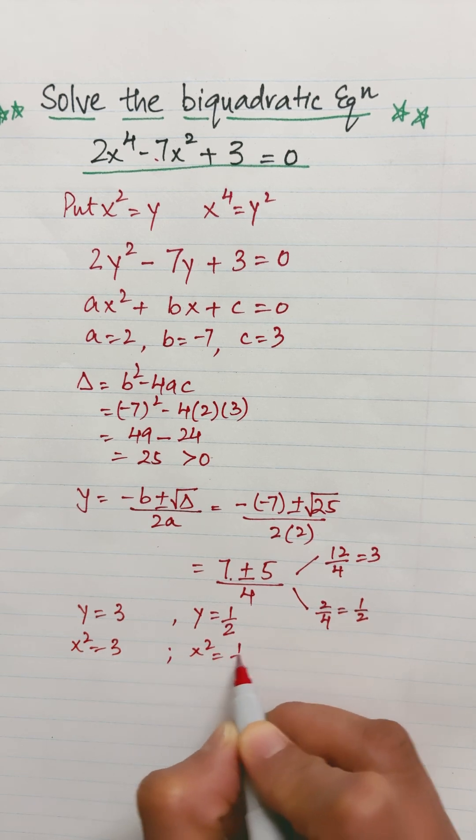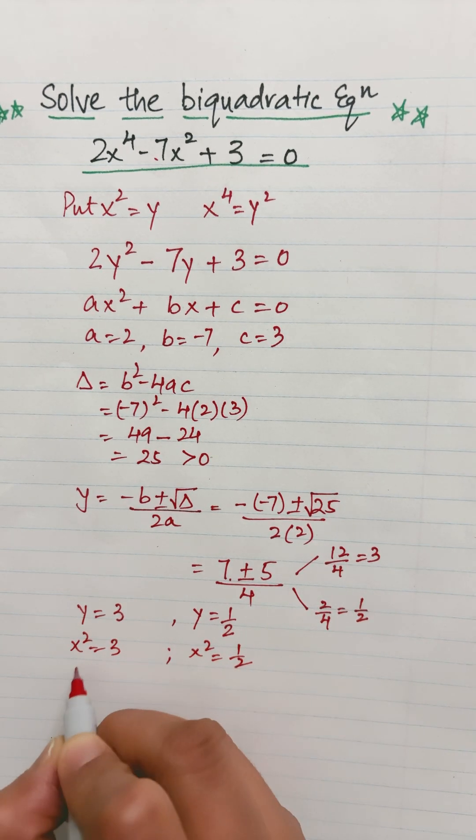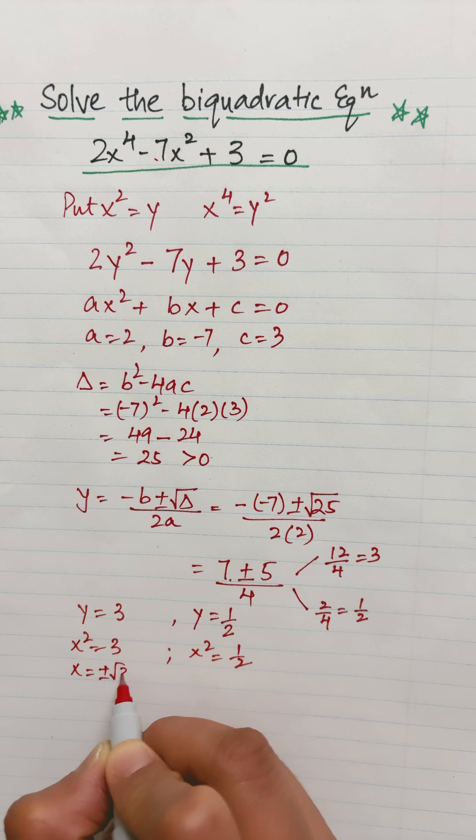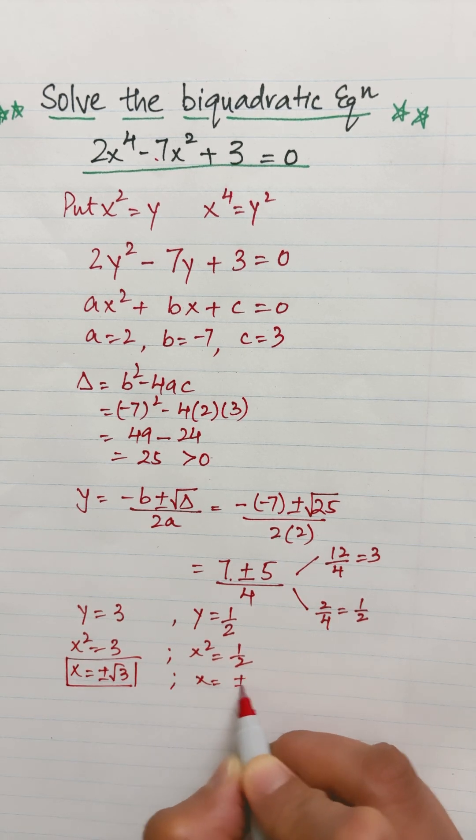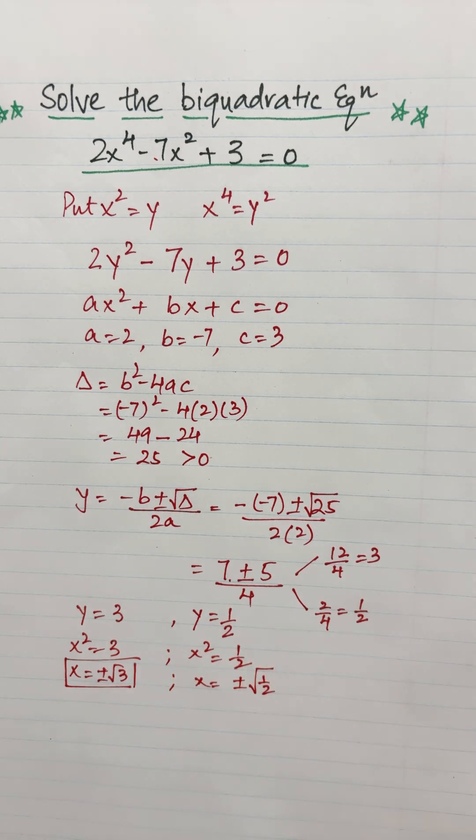I need to find the value of x, so x will be plus minus root 3 from this side. And from here, x will be equal to plus minus square root of 1 half, so it will give me plus minus 1 over square root of 2.